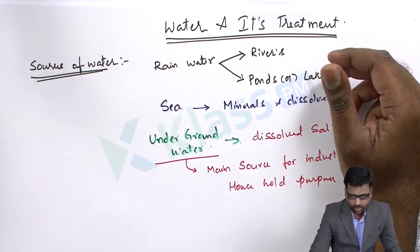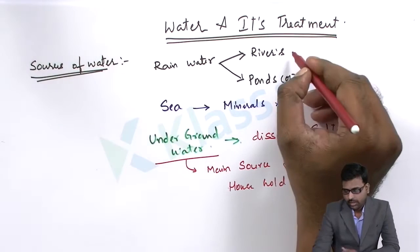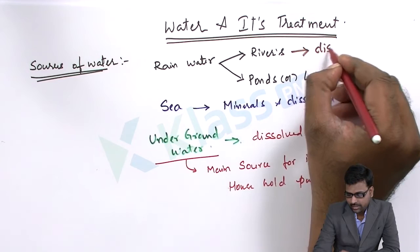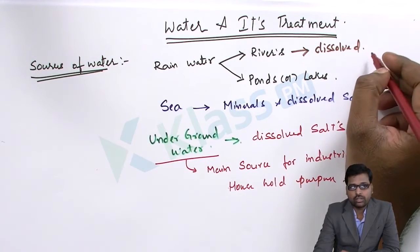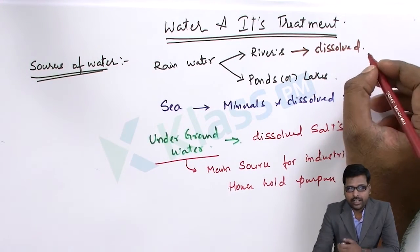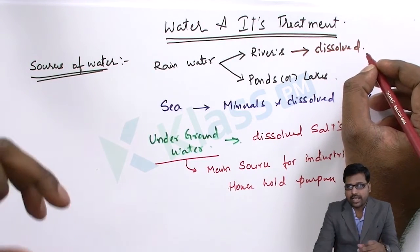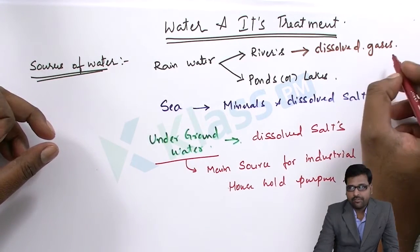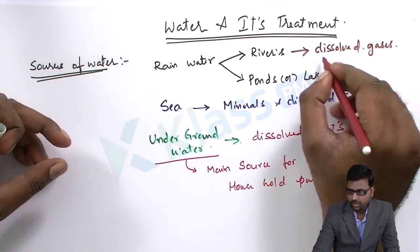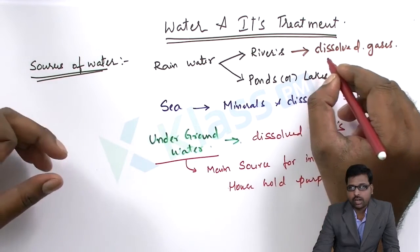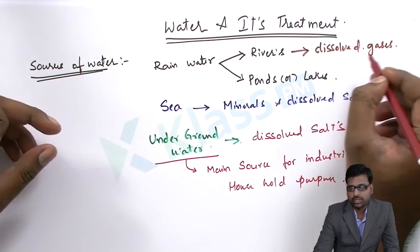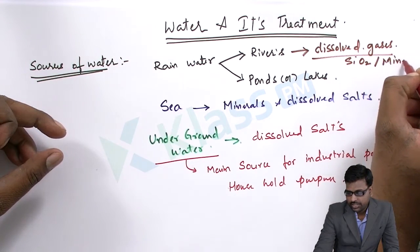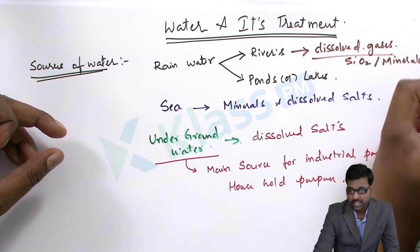Rainwater mainly contains dissolved gases, because as the rainwater comes from the clouds it picks up gases and forms dissolved gases. After reaching the earth, it dissolves whatever salts it comes across in its journey as it overflows, like silica or any sort of minerals available on the surface of the ground.